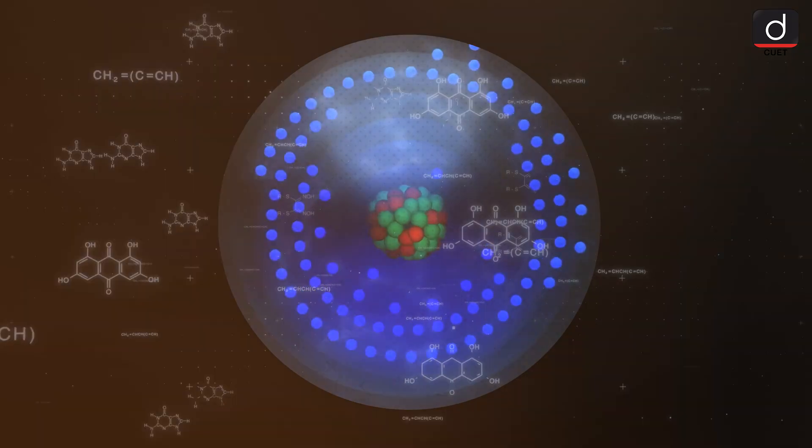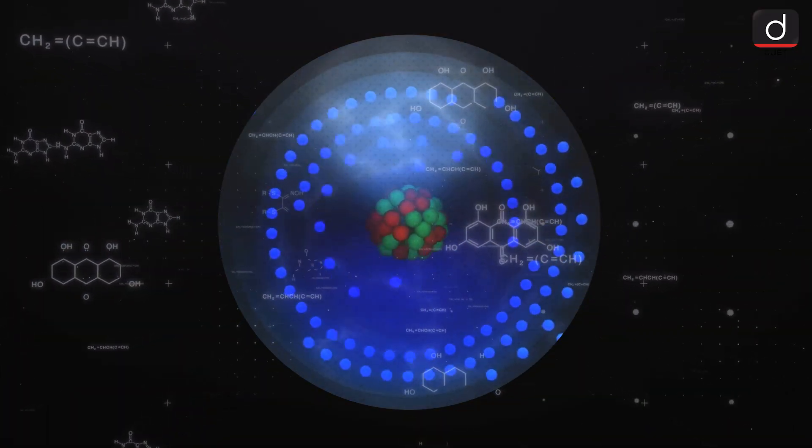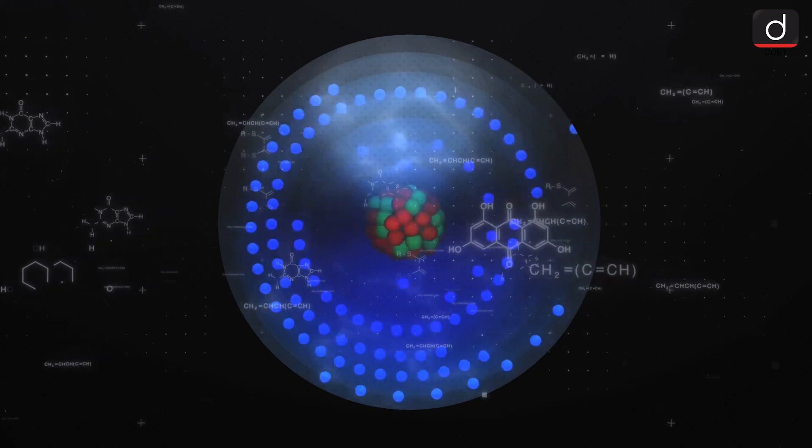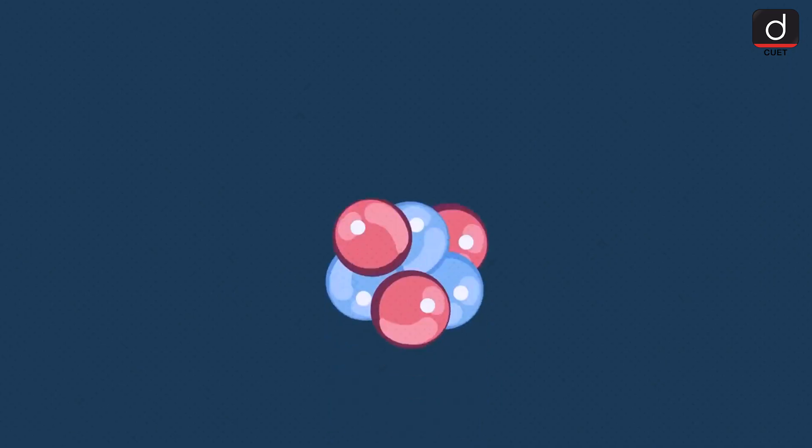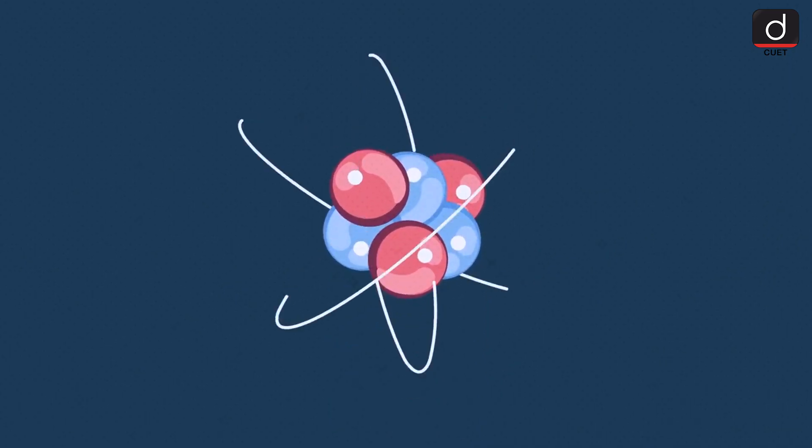2. Neutrons. These have no charge, neutral. They add weight to the atom and help hold the nucleus together. Together, protons and neutrons are called nucleons.